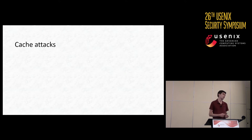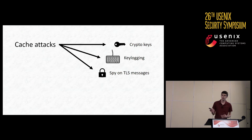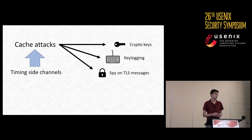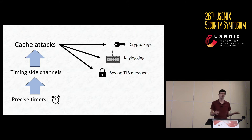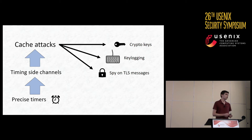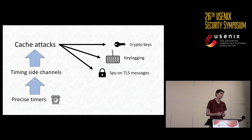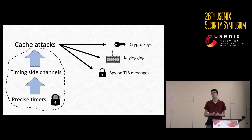Cache attacks are a well-known class of attacks that has been shown to be able to recover crypto keys, perform key logging, and spy on the plain text of TLS messages. Cache attacks are generally based on timing side channels in processor hardware, specifically in caches. Exploiting these timing side channels generally depends on the accuracy and availability of precise timers, or things we can use as timers, like cycle counters. Unfortunately, timers are imperfect and can be subject to quite a fair bit of noise. Even worse, major classes of defenses against cache attacks specifically target these timers — either intentionally injecting noise to reduce their accuracy or precision, or restricting access to them altogether. We demonstrate a cache attack which does not rely on precise timers or even timing side channels of any kind.